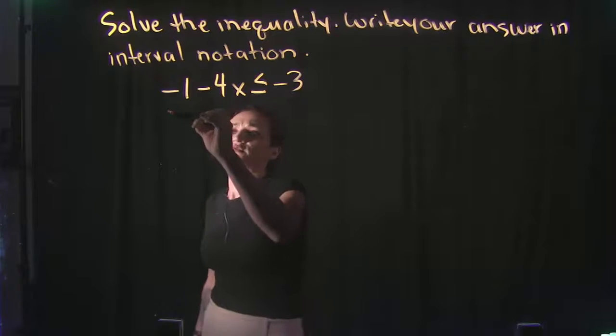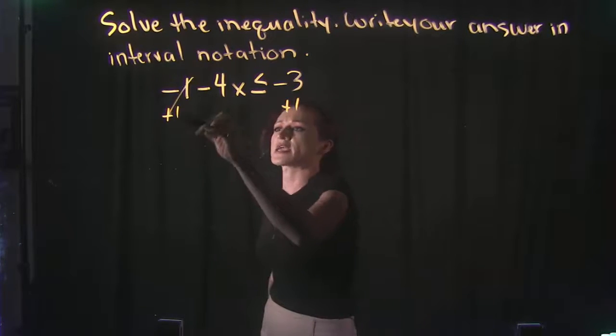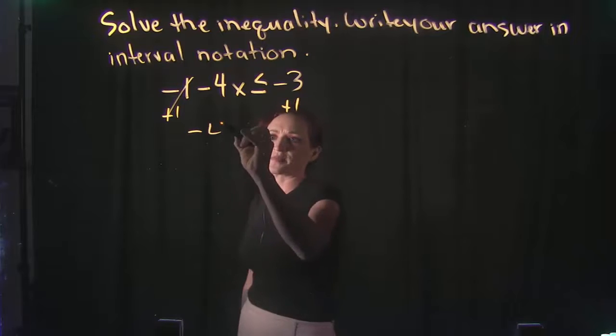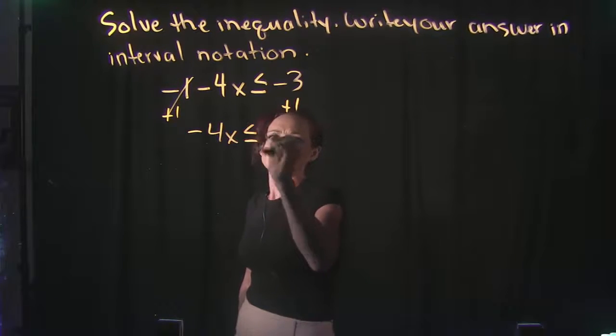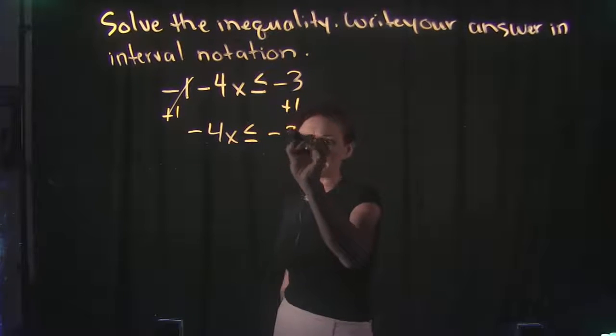So if we're solving for x, the first thing we want to do is add this 1 on both sides. Negative 1 plus 1 cancels. So we drop down to minus 4x is less than or equal to. Well, negative 3 plus 1 is a negative 2.